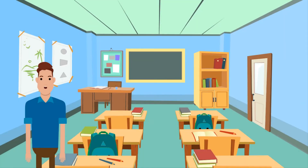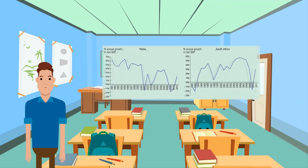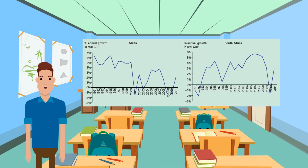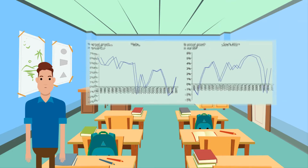All countries experience cyclical fluctuations in their rate of economic growth over time. Growth is seldom constant, bouncing around quite a lot. In these two examples from different countries, you will also notice that the growth is not necessarily at the same time in the different countries.